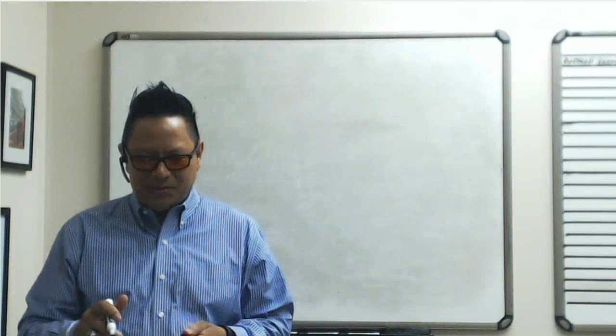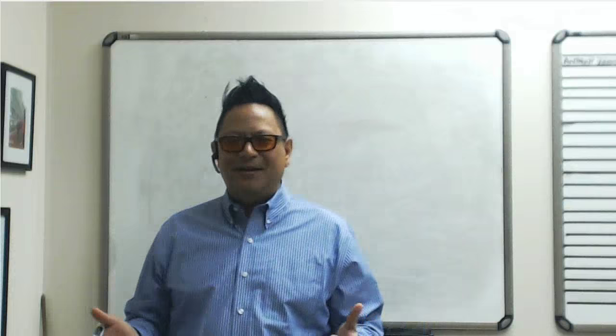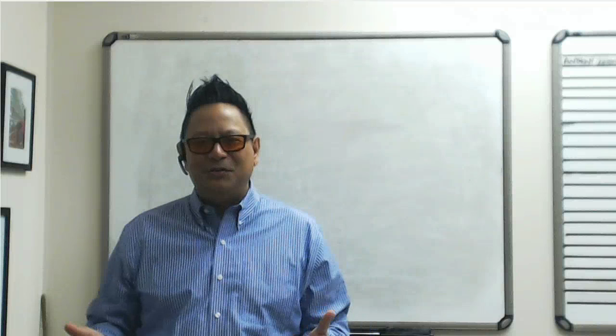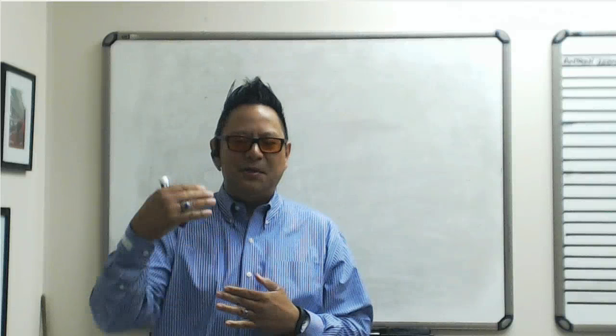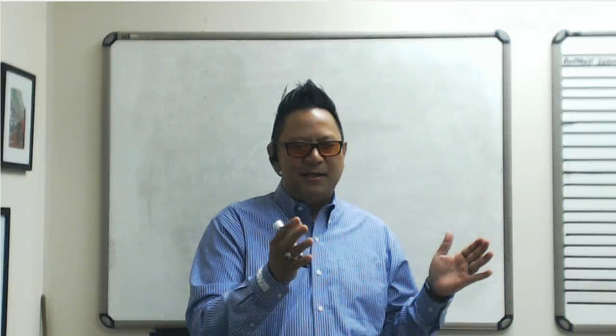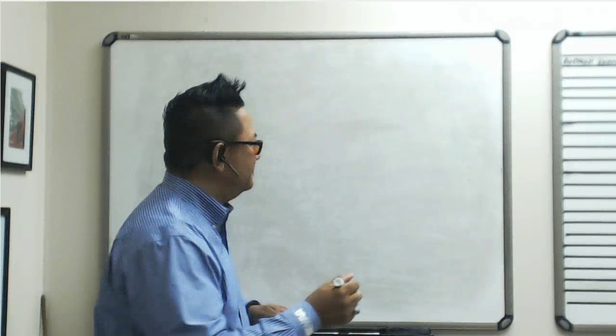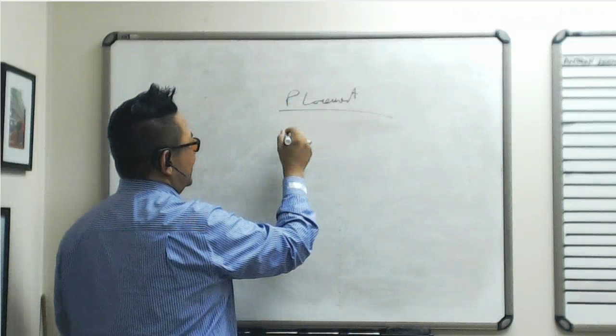What is placement? What is persistency? When you get a policy written up, it's not automatically issued right away — it has to go through underwriting. The term 'placement' means that when you submit an application, it's either placed or not placed. When it's placed, it gets issued, paid, and you get paid on it.